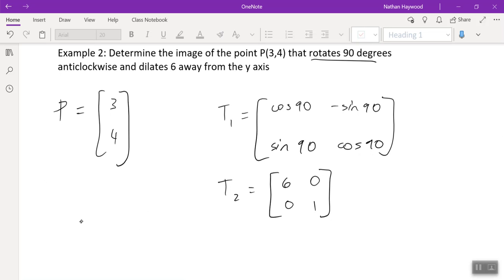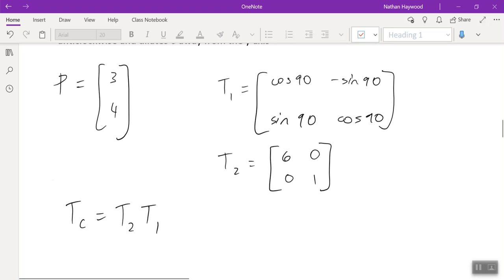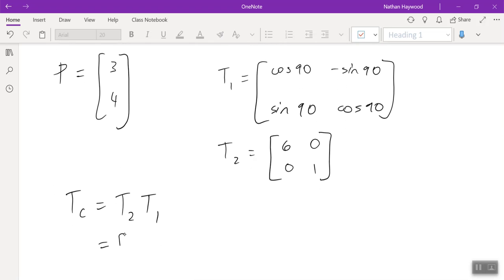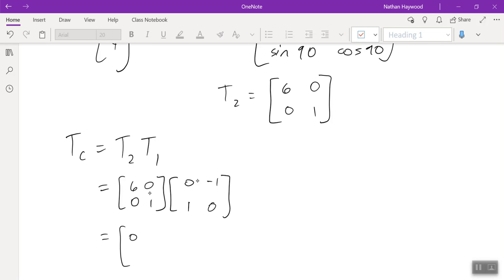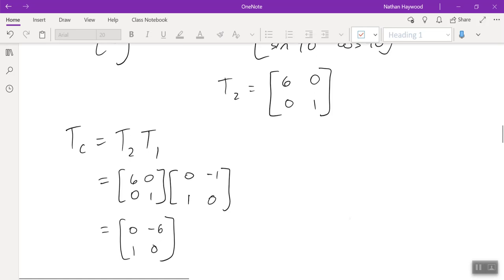So they're combined. Remember the order I said? T_2 times T_1. So cos 90 is zero, sin 90 is one. Zero times one is zero. Six times negative one plus zero is negative six. Zero times zero is zero, one times one is one. Zero times one is zero. So row by column. You should be comfortable with that.